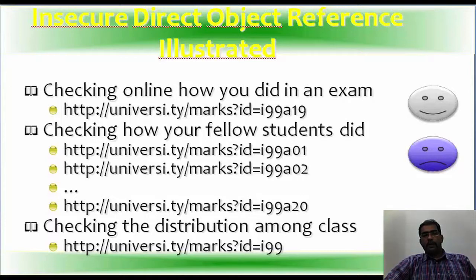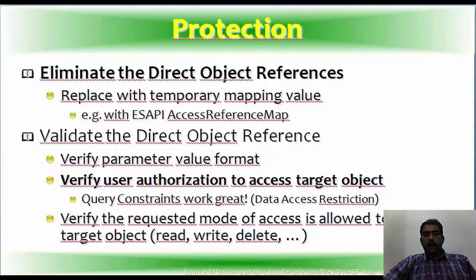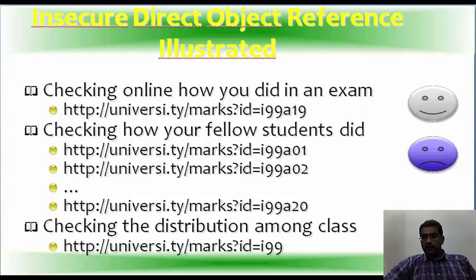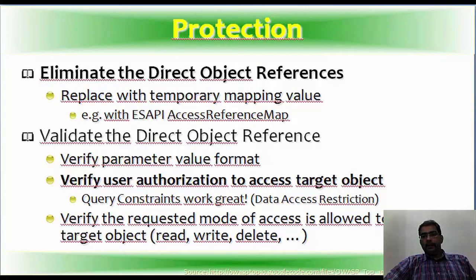For example, checking exam results online at 'http://university/marks?id=something' — a user could change the ID in the URL to see another student's marks, which they are not supposed to see. This is an insecure direct object reference. The wrong approach is using a plain ID in the URL, since if you know someone's ID you can directly access their data.